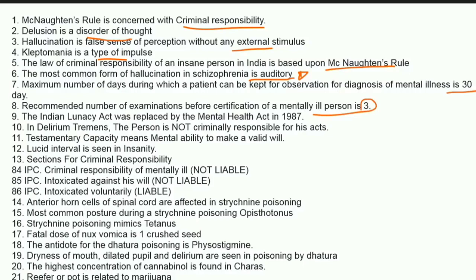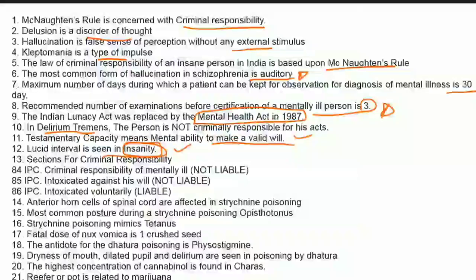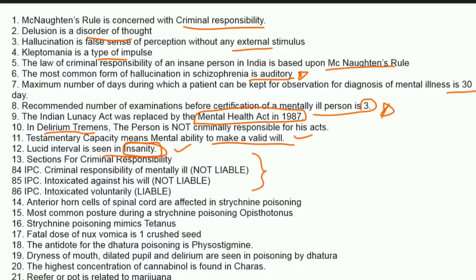The recommended number of examinations before certification of a mentally ill person is three. The Indian Lunacy Act was replaced by the Mental Health Act in 1987. In delirium tremens, the person is not criminally responsible for his acts. Testamentary capacity means the mental ability to make a valid will. Lucid interval is seen in insanity. Under IPC: mentally ill — not liable; intoxicated against his will — not liable; intoxicated voluntarily — liable.